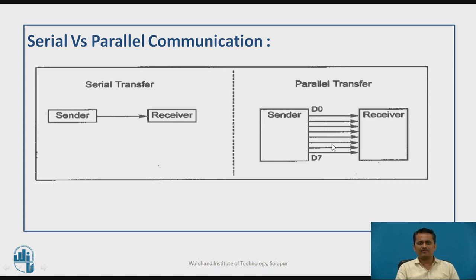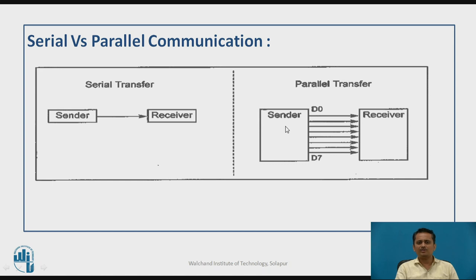When you go for parallel communication, the speed of transmission increases because you are sending 8 bits at a time, whereas in serial communication you send bit by bit. However, if the communication speed available with serial communication is sufficient for a certain application, there is no need to use parallel communication, which increases hardware cost in the form of additional lines, especially when senders and receivers are far away.